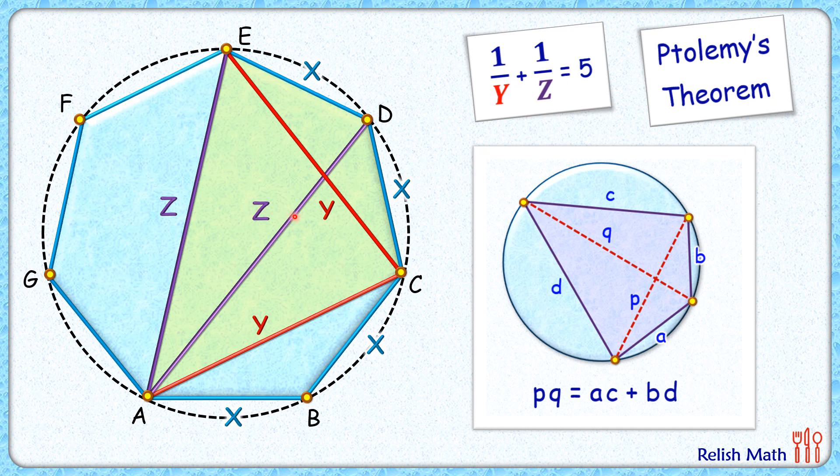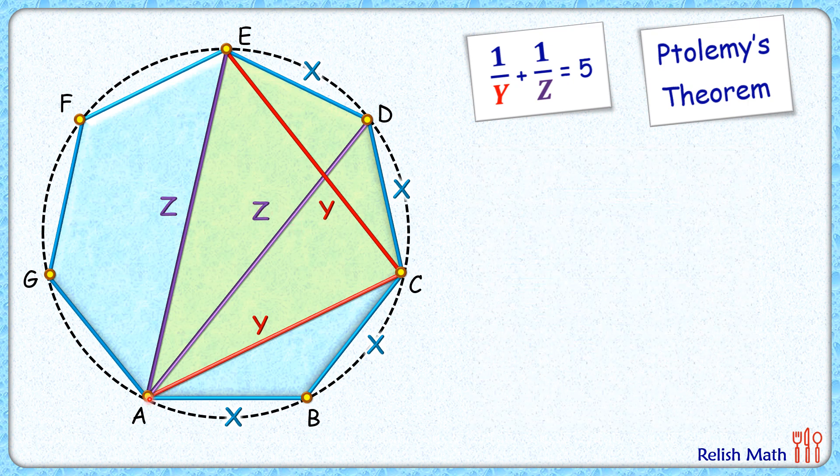Applying Ptolemy's theorem in this cyclic quadrilateral, we get the product of diagonals AD × EC equals the sum of product of opposite sides: AC × ED + CD × EA.